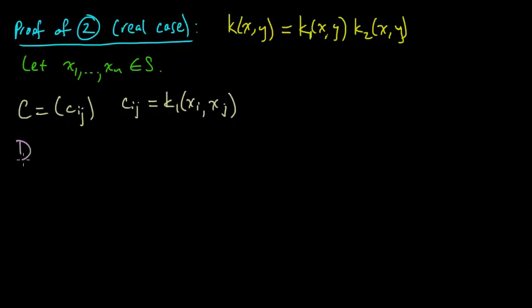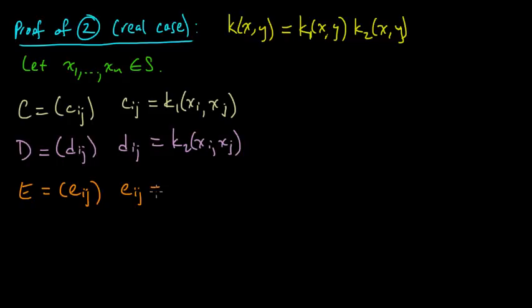And let's take D with entries D_ij, the matrix obtained by evaluating k2 at each pair x_i, x_j. And we need the third matrix, the one that we are interested in. Let's call it E, E_ij, with entries E_ij. This is going to be the matrix for k. So this will have entries C_ij times D_ij, because the ijth entry of this matrix should be k of x_i, x_j. And that's just the product of these two.